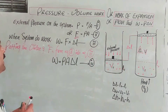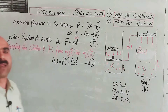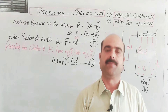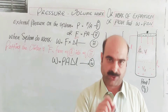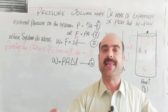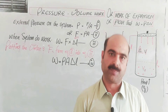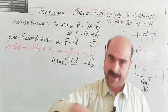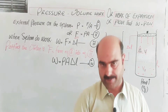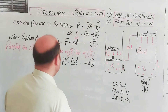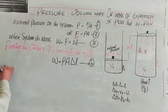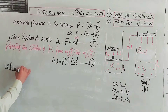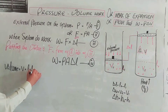Now, volume is actually length multiplied by width multiplied by height. Volume equals L times L times L — length, width, height. Two lengths — length and width — give us area. Area times height gives us volume. So volume represents L into L into L, meaning length times width times height.